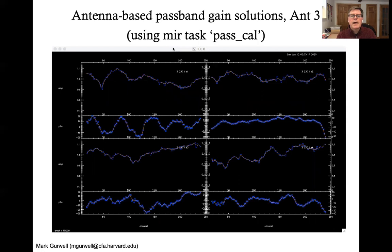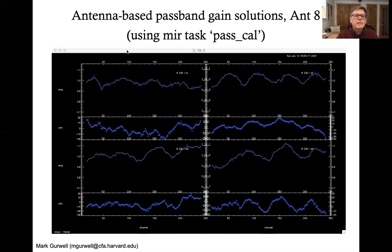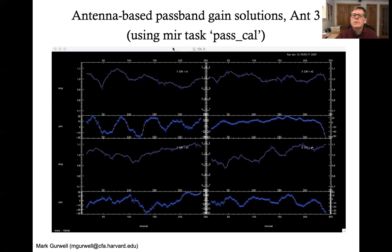So you use the MIRIAD task Pascal to calculate in this case antenna-based gains as a function now of channel or frequency for each of the four chunks. In this case here is antenna 3. You have S1, S2, S3, and S4. And you can see it's calculating sort of a wavy structure in the phase as well as in the amplitudes. And this is for a different antenna related to the same baseline, the 3-8 baseline. This is antenna 8 and its structure is broadly similar but quite also different in the details between the two.